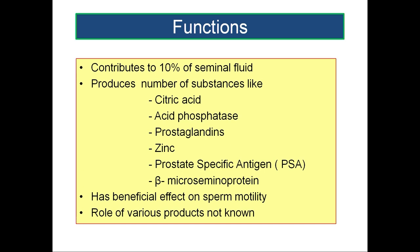Let us look at the functions of the prostate. Prostate contributes to 10 percent of the seminal fluid. The secretions of the prostate are acidic in nature because they contain citric acid, acid phosphatase, prostaglandins, zinc, prostate-specific antigen, and beta-microseminoprotein. Some of these products have beneficial effects on sperm motility.